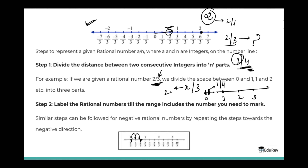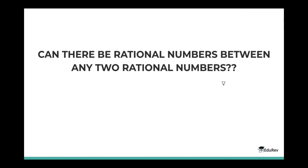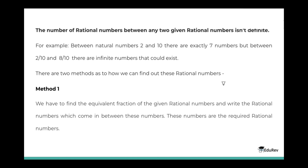This is how the representation of rational numbers is done on the number line. Now, can there be rational numbers between any two given rational numbers? Yes, of course there can be. But the number of rational numbers between any two given rational numbers is not defined, unlike whole numbers and natural numbers. For example, between natural numbers 2 and 10 there are exactly 7 numbers, but between 2/10 and 8/10 there are infinitely many numbers that could exist.